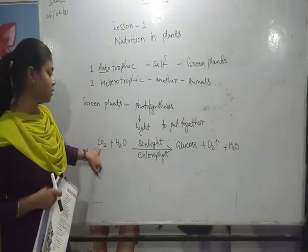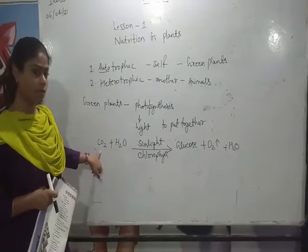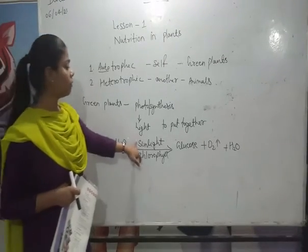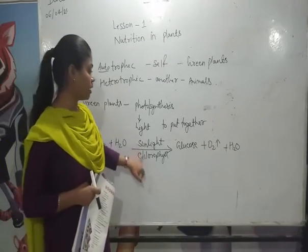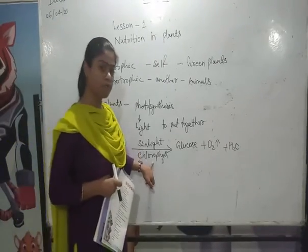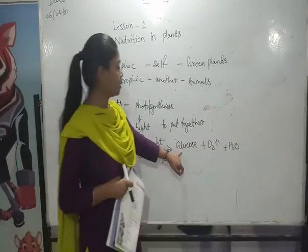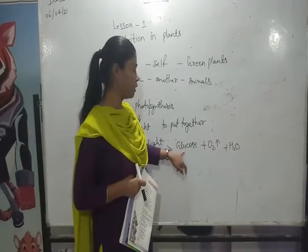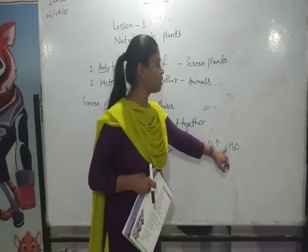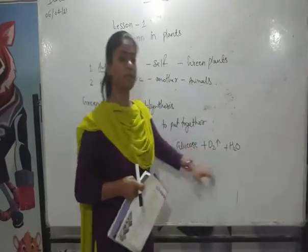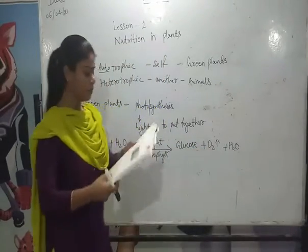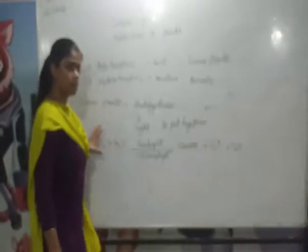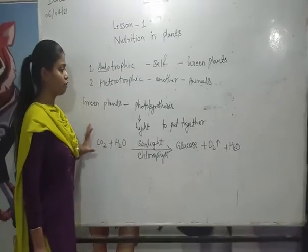Carbon dioxide is taken from the atmosphere, and water is taken from the roots. With the help of sunlight, in the presence of chlorophyll, plants make glucose — that is their food — and starch. They also release oxygen, which is necessary for all living beings. So this is the process of photosynthesis by which plants make their own food.